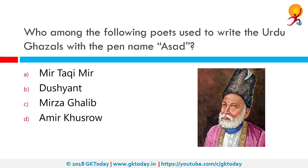Who among the following poets used to write Urdu Ghazals with the pen name Asad? The correct answer is Mirza Ghalib. His original name was Mirza Asadullah Baig Khan, and before using the pen name Ghalib, he wrote with the pen name Asad, which means a lion. He was honored with the title of Dabir-ul-Mulk by Bahadur Shah Zafar II. When the title Mirza Asad was given to him, he came to be known as Mirza Ghalib.